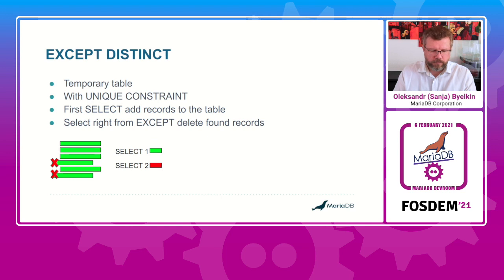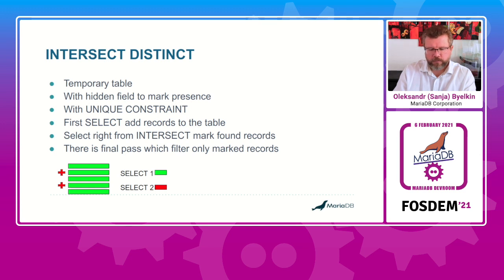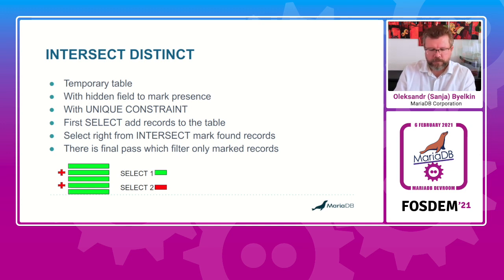EXCEPT DISTINCT is not complex either: for the EXCEPT part, we just remove found rows — using the unique constraint as an index to find duplicate rows and remove them. INTERSECT DISTINCT is a bit more complicated: it requires a special hidden field where rows are marked on each pass. The first SELECT adds records, the second marks found records, and then there is a final pass — the filtering I mentioned — which filters only the marked rows as the result.